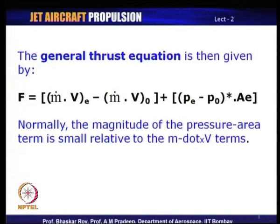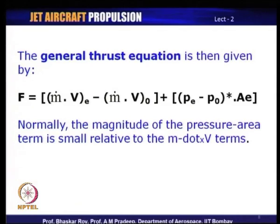The mass flow rate ṁ can change slightly from inlet to exit because fuel has been added somewhere inside the propulsive system. That small addition of fuel makes a difference in ṁ between inlet and exit, and that difference must be factored into the calculation to get a more accurate estimation of momentum thrust.